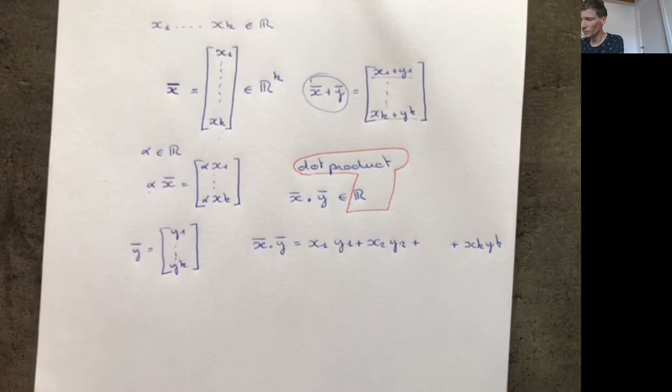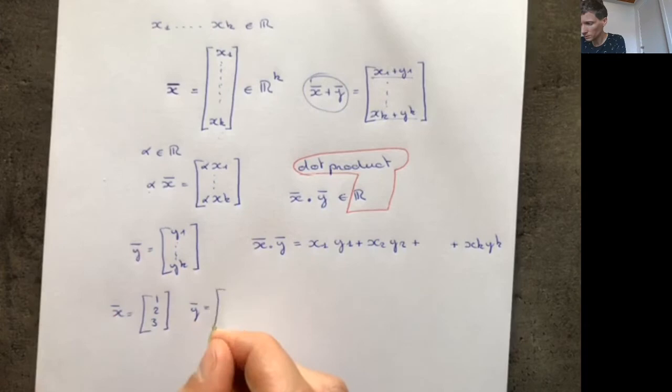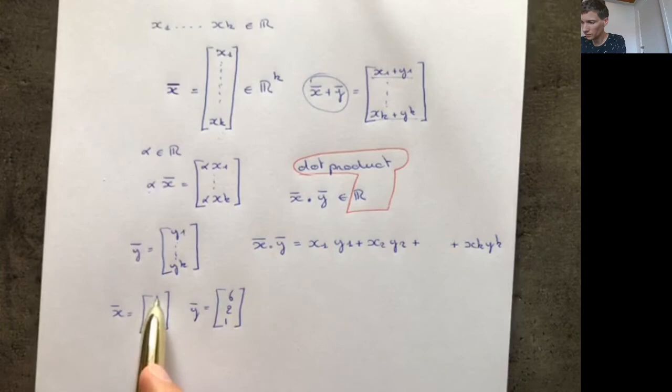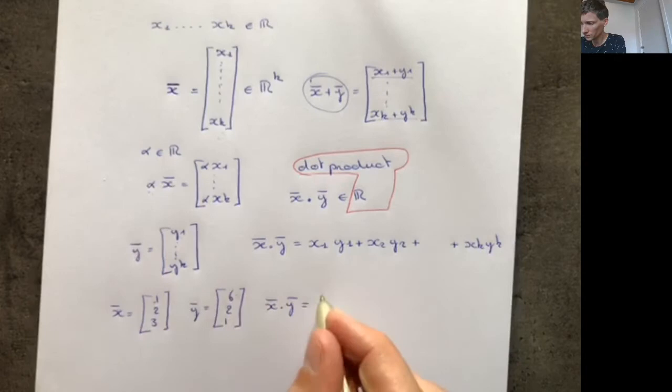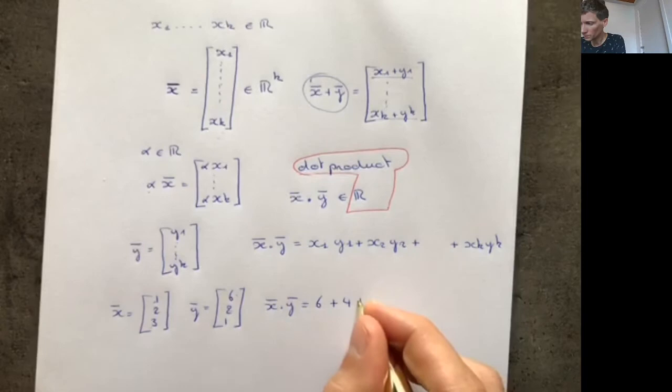For example, if x = (1, 2, 3) and y = (6, 2, 1), then the dot product is: first elements give 1 × 6 = 6, second elements give 2 × 2 = 4, and third elements give 3 × 1 = 3. Six plus four plus three is thirteen.